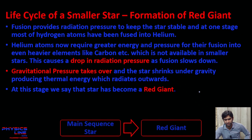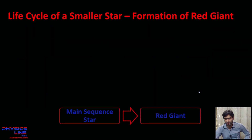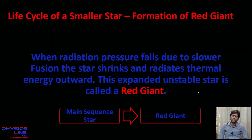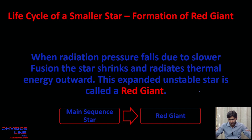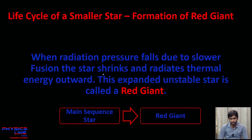The definition of a red giant: when radiation pressure falls due to slower fusion, the star shrinks and radiates thermal energy outwards. This expanded, unstable star is called a red giant.